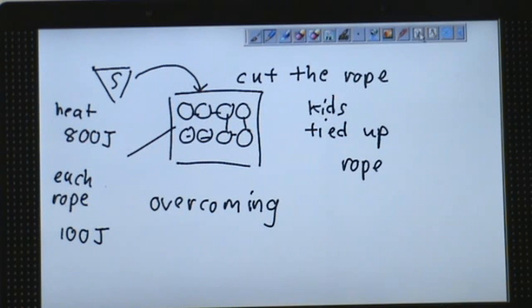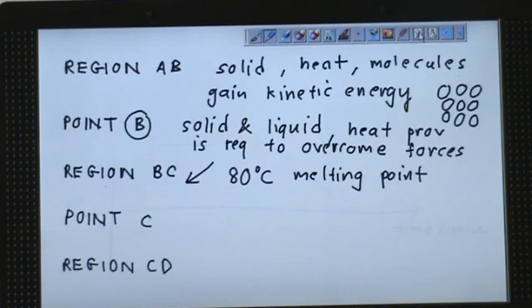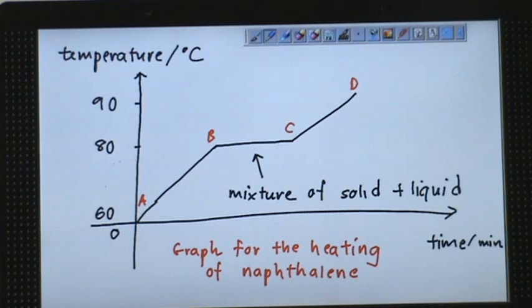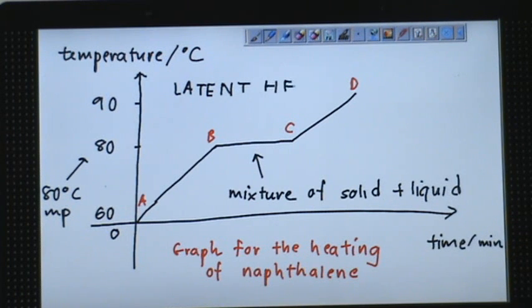So we don't see any changes of temperature. So that's region BC. So this region is where you have a mixture of solid and liquid. You can pretty much say that this is a transition state. This transition state and the melting point temperature is 80 degrees Celsius. And there's a special name for this kind of heat. This kind of heat is called latent heat of fusion. So this latent heat of fusion is the heat required to overcome the forces of attraction of the solid, transforming it into liquid.